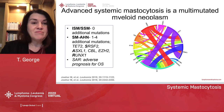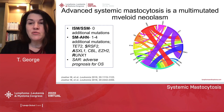We now know that advanced systemic mastocytosis is a multi-mutated myeloid neoplasm, like AML. This is some work that came out of Andreas Reiter's laboratory a few years ago.